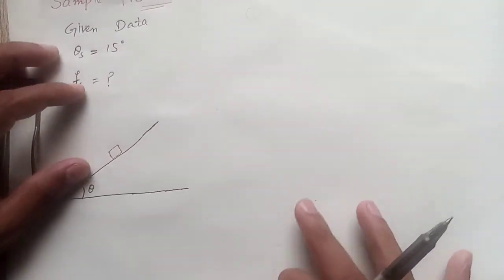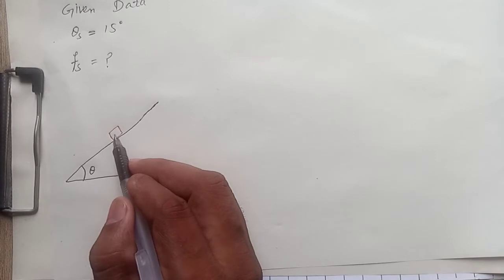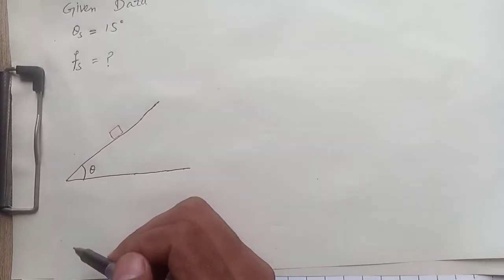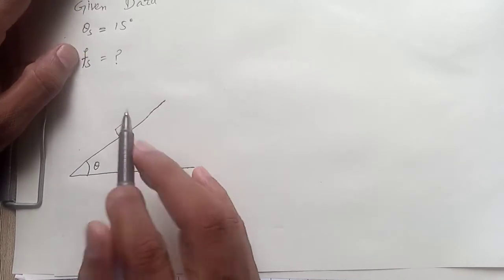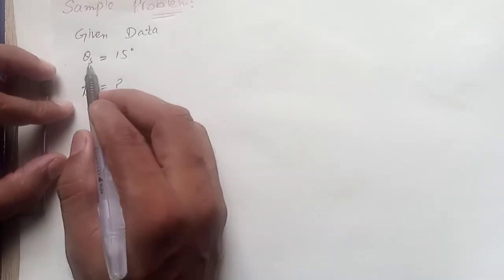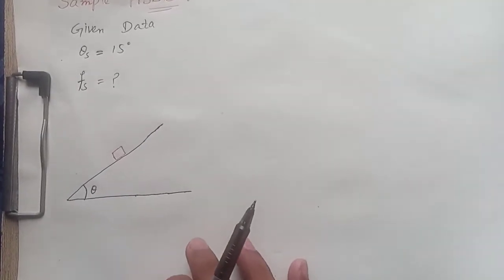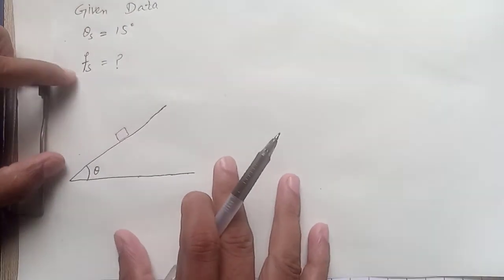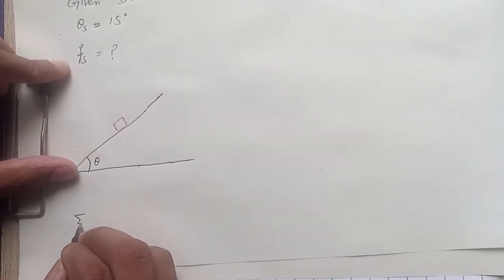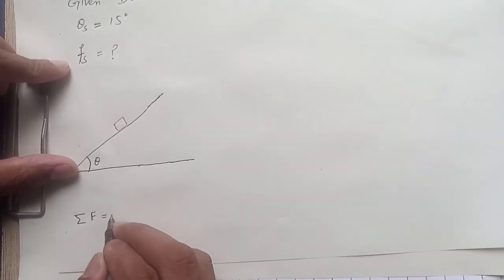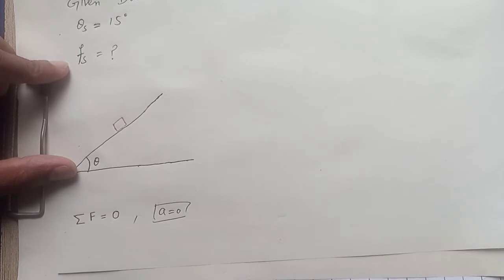As stated, the block is on an inclined plane. When the block is just about to move, we have to calculate the coefficient of static friction, and the angle of inclination at that point is given as 15 degrees. According to Newton's second law of motion, the net force acting on the block is zero, so its acceleration is also zero — the block is at rest.